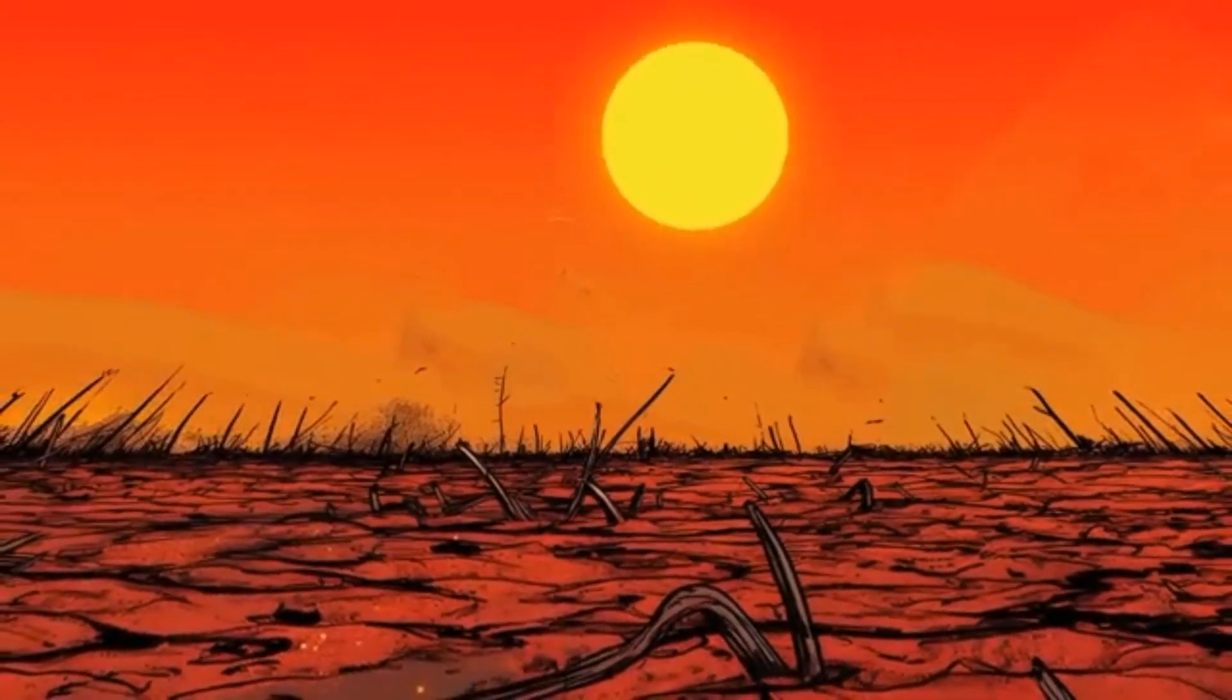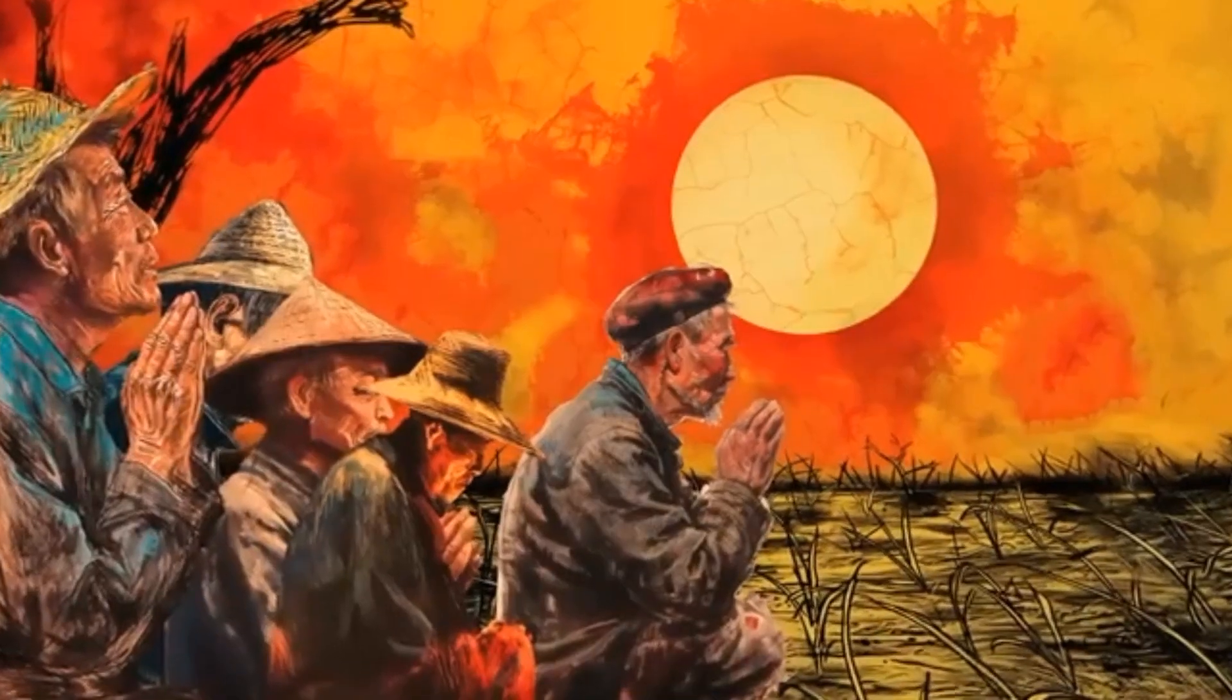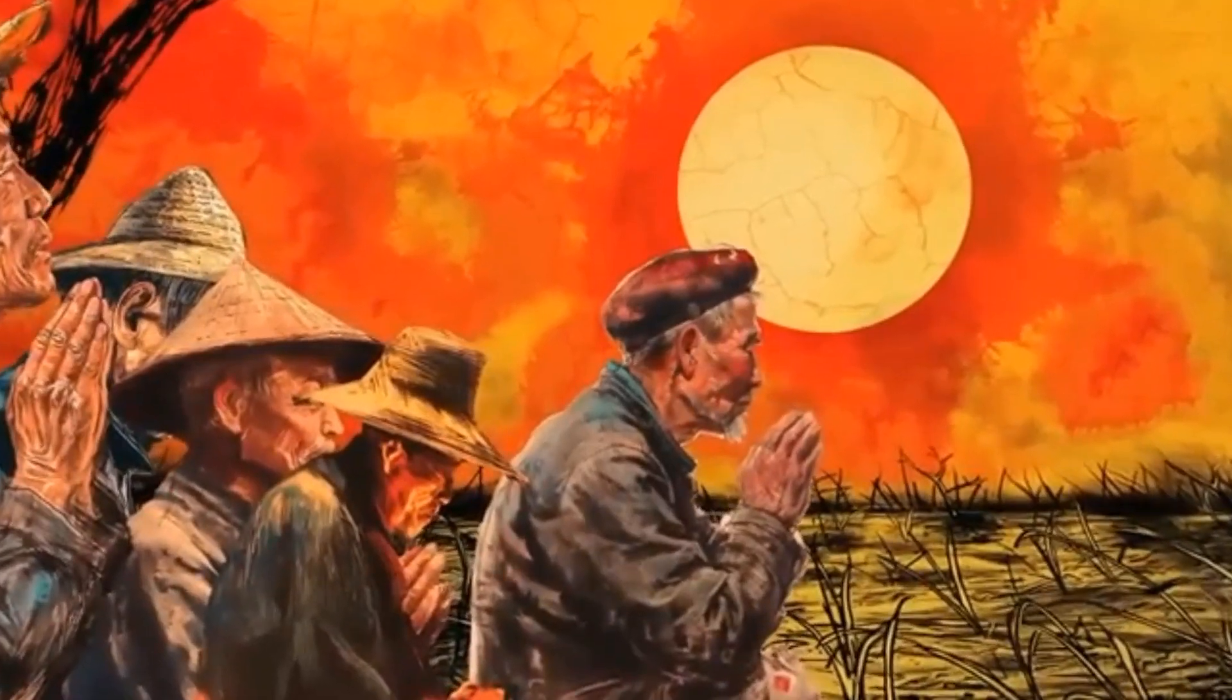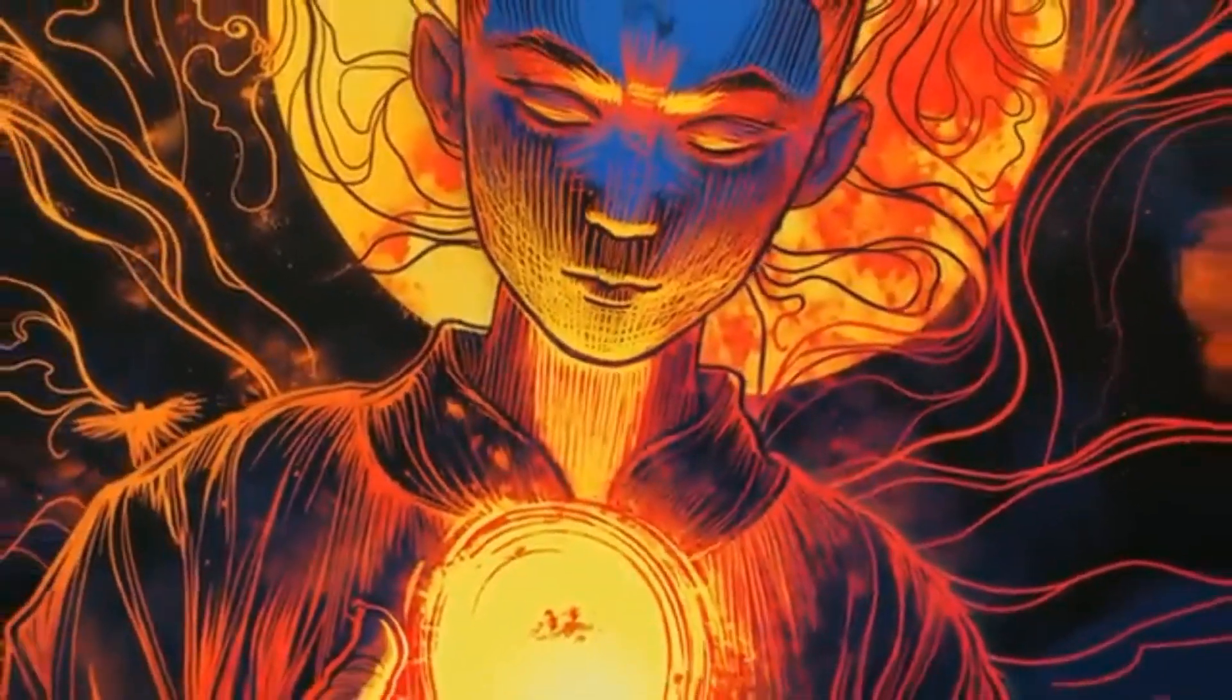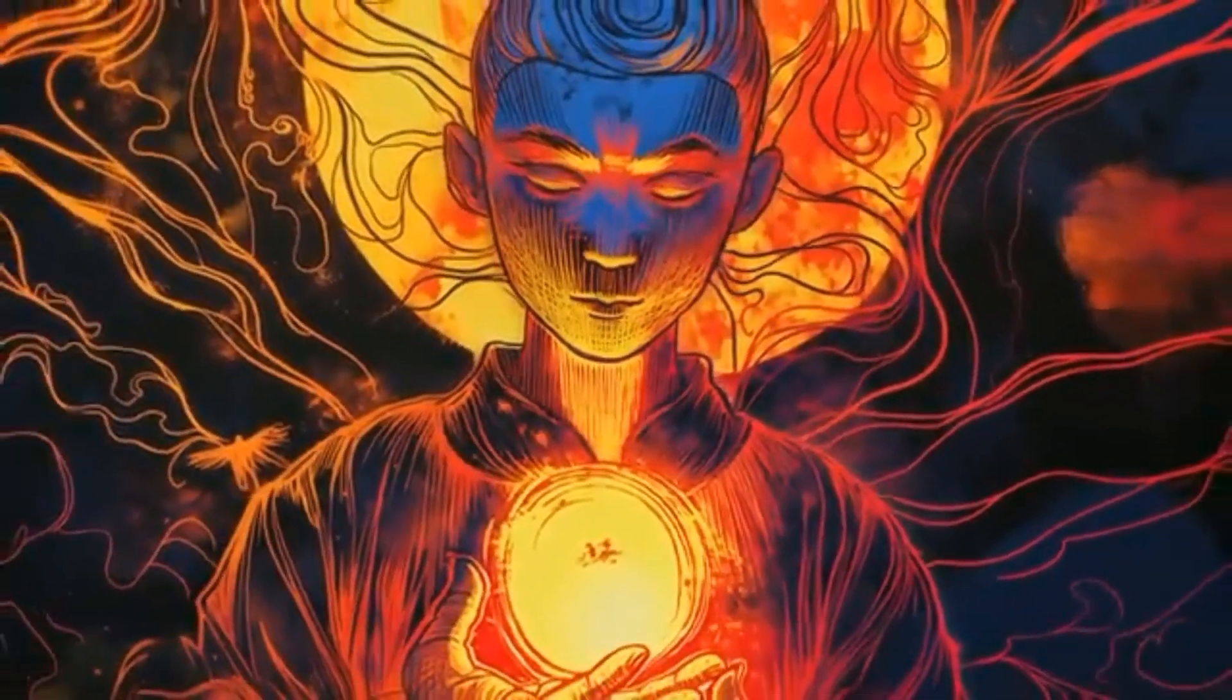Desperate, the people prayed for help, and a boy with divine powers came to their aid. He captured six of the suns, leaving just one to provide light and warmth, restoring balance to the earth.